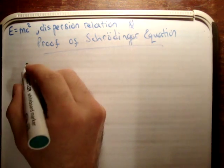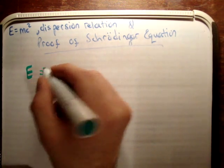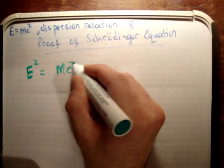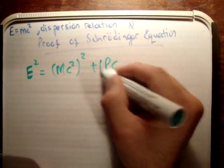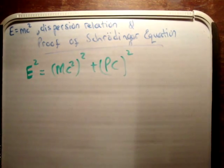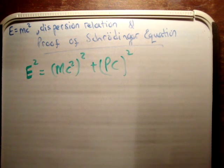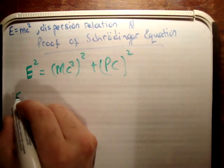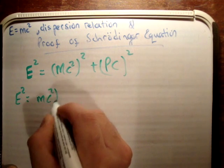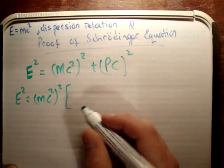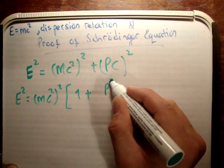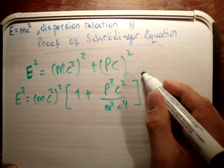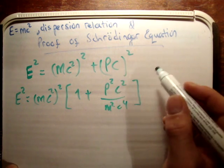We know from relativity and Einstein that E squared is equal to (mc²)² plus (pc)². If you don't know that, look up a modern physics book. So let's factorize that by taking out mc squared squared, and we're going to have that outside of 1 plus p²c²/m²c⁴, and that's all going to be squared.